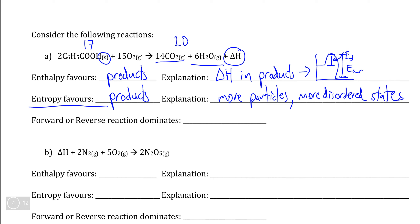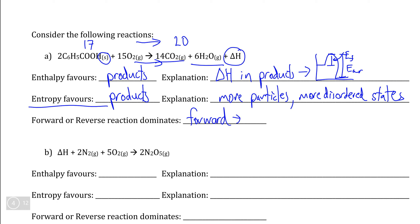From these observations, because enthalpy and entropy are both pushing the reaction to go in the forward direction, neither is pushing the reaction in reverse. Therefore we can conclude that the forward reaction dominates, the reaction will go to completion, and no equilibrium system will form.